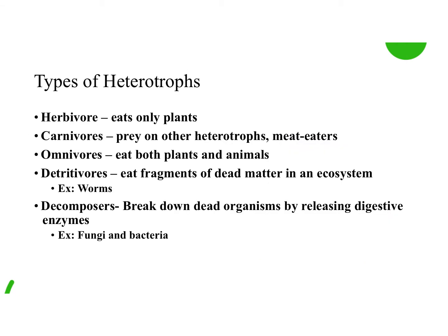Not all heterotrophs are equal — there are different ways to get energy. We have herbivores, which are plant eaters only. Carnivores have to eat other heterotrophs — these are our meat eaters. Omnivores eat both plants and animals. Detritivores eat fragments of dead matter in an ecosystem; an example would be a worm. And then we have decomposers, which release digestive enzymes to break down dead organisms — examples are fungi and bacteria.